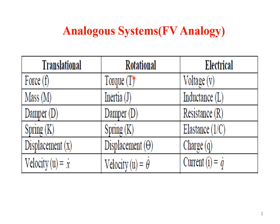For a rotational system, torque is considered as equivalent to voltage and this analogy is termed as torque voltage analogy. Inertia J is considered as equivalent to inductance L. Damper D is considered as equivalent to resistance. Spring is again taken as elastance which is 1/C. Displacement theta is considered as equivalent to charge Q, and angular velocity is considered as equivalent to current.